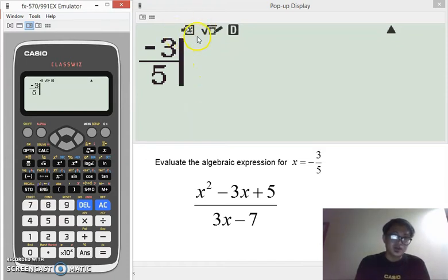This icon here will appear, meaning we are now ready to assign this value to a variable. Now, conveniently, the most commonly used variable x already has a special button in the ClassWiz.